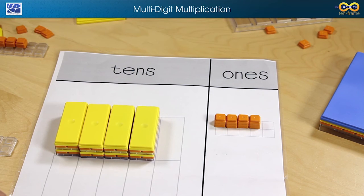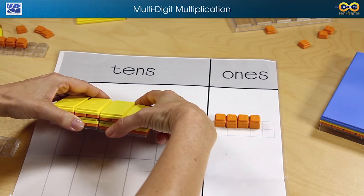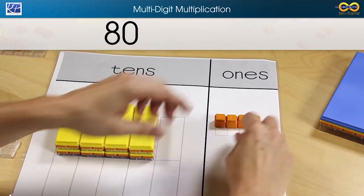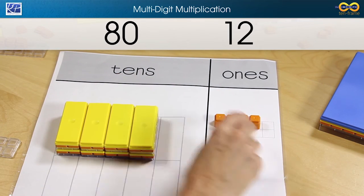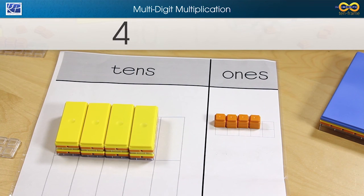So now the students can look at partial products. They can see that in the tens place we have 80 and in the ones place we have 12. So 80 plus 12 gives us 92. 4 times 23 is the same as 92.